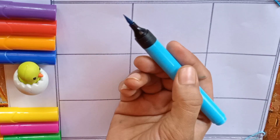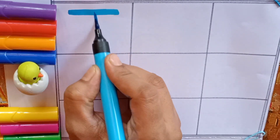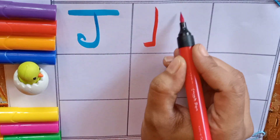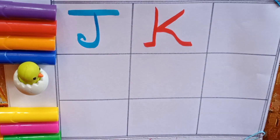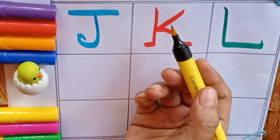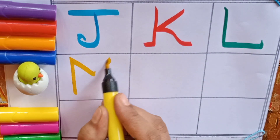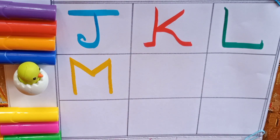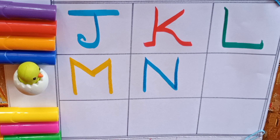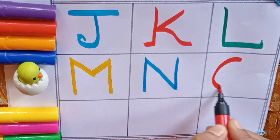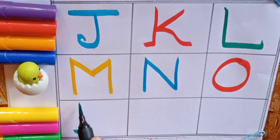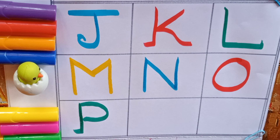Let's learn alphabets. N for kitten. O for orange — orange is a fruit. Green. P for parrot. Parrot is a bird. Yellow.